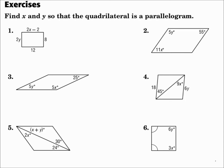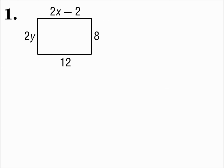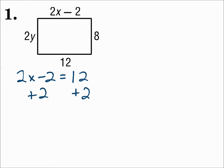Find x and y so that the quadrilateral is a parallelogram. Even though we don't yet know that this is a parallelogram, we're going to make it a parallelogram, and the way the questions work is exactly the same as in the previous lesson. We have the side lengths, and since opposite sides need to be congruent, we set them equal. Starting with x: 2x minus 2 equals 12. Add 2 to each side, then divide by 2, and x is 7.